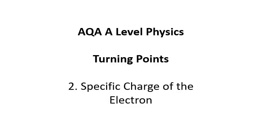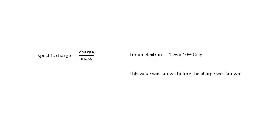AQA A-level physics turning points: the specific charge of the electron. Specific charge is e over m, the charge divided by the mass. For an electron, it is minus 1.76 times 10 to the 11 coulombs per kilogram.